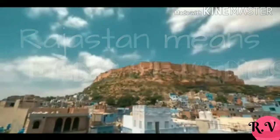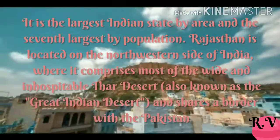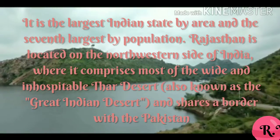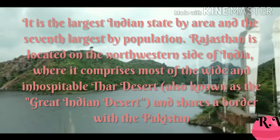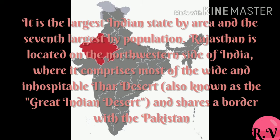Rajasthan means the land of kings. It is the largest Indian state by area and the 7th largest by population. Rajasthan is located on the northwestern side of India where it comprises most of the wide and inhospitable Thar Desert, and shares a border with Pakistan.